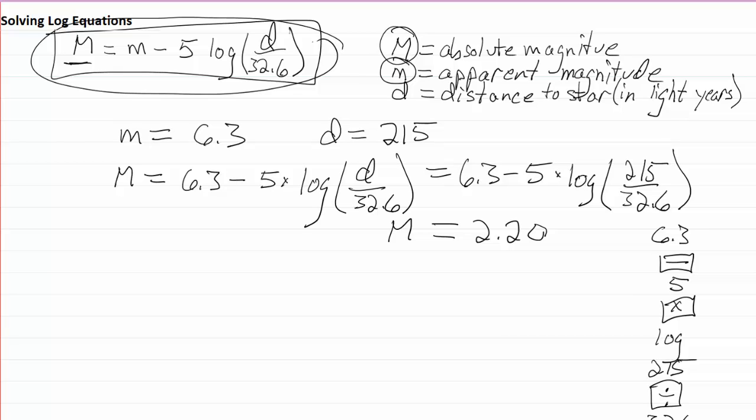So here's how I'll do it. Okay, first thing I'll do is subtract the lowercase m from each side, and I have to be careful to not confuse upper and lowercase. And so that will equal negative 5 times the log of d over 32.6. I'll divide both sides by negative 5 next.